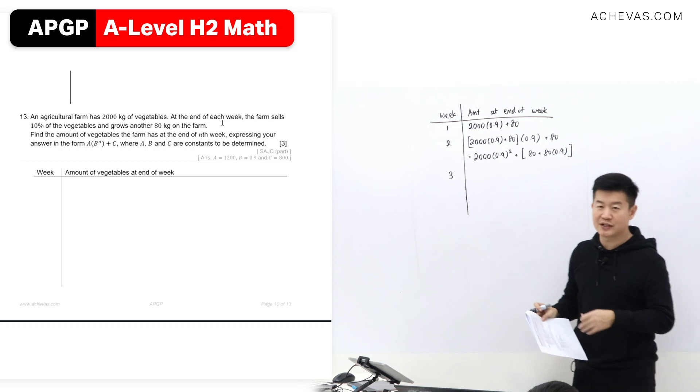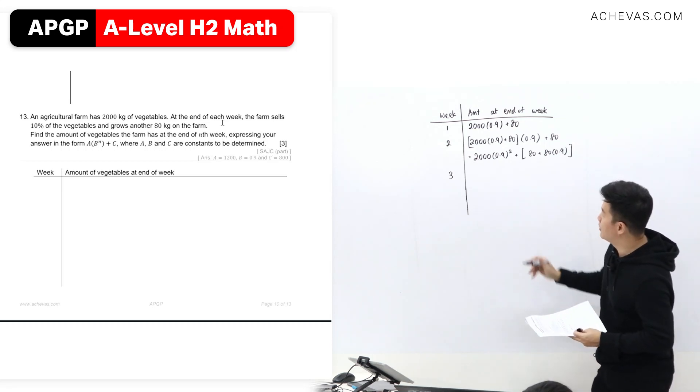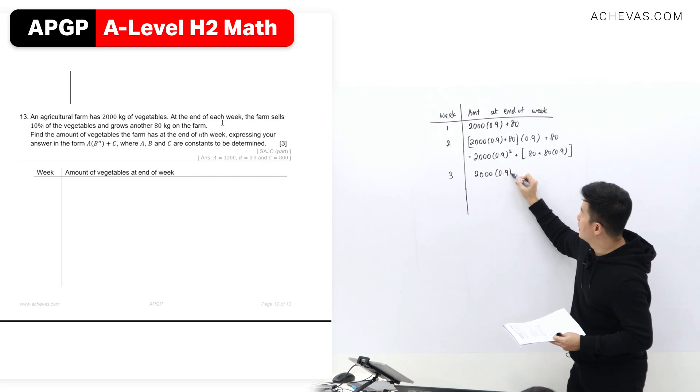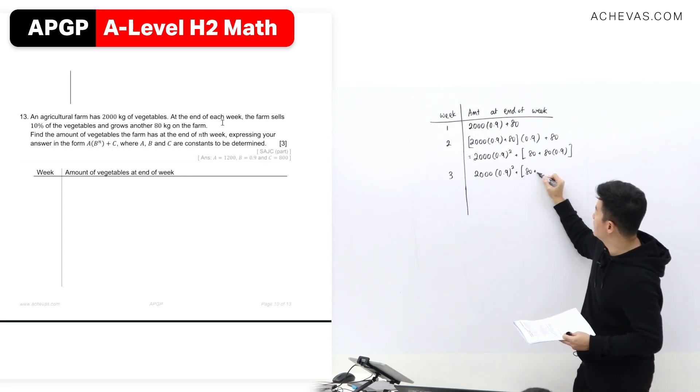Just to justify the pattern that I'm seeing. I mean, actually I'm already seeing a pattern, but to just justify it, I think I'm going to go for one more row. So 2,000 times 0.9 to the power of 2 plus 80, 80, 0.9.